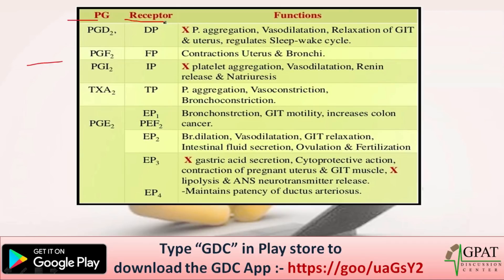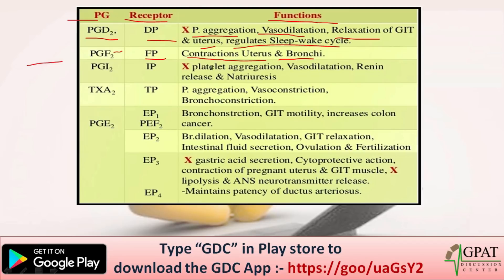PGD2 acts on receptor DP; functions include platelet aggregation, vasodilation, relaxation of GIT and uterus, and regulating the sleep-wake cycle. PGF2 acts on receptor FP; functions include contractions of the uterus and bronchi. PGI2 acts on receptor IP; functions are platelet aggregation, vasodilation, renin release, and natriuresis.